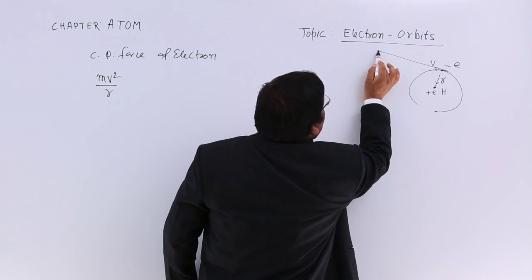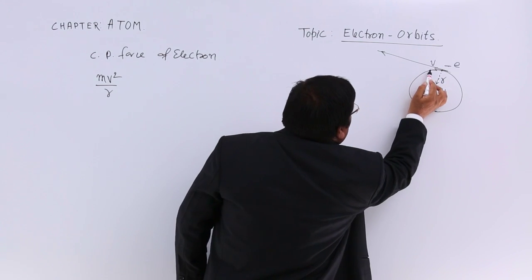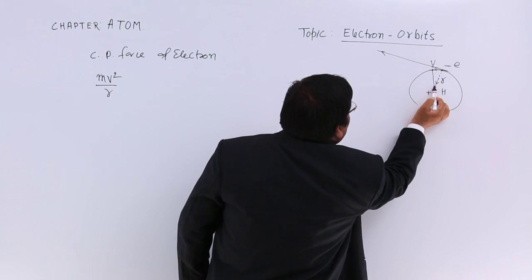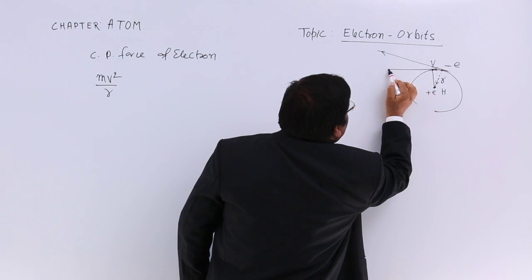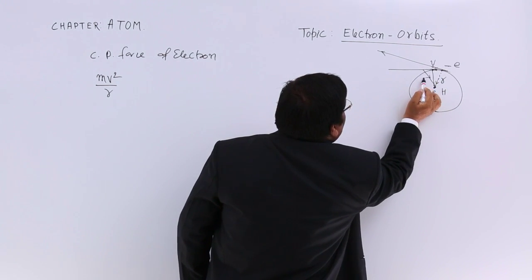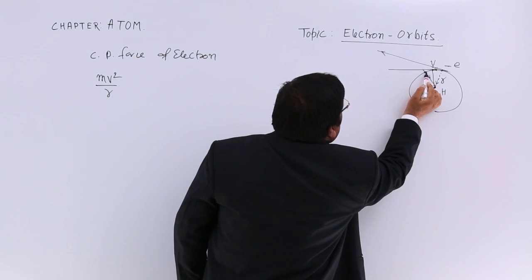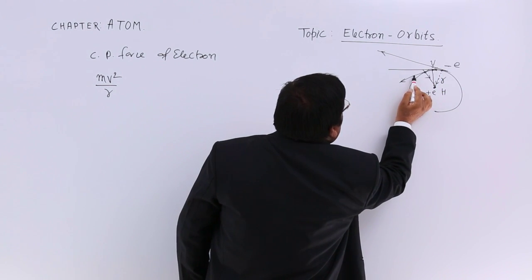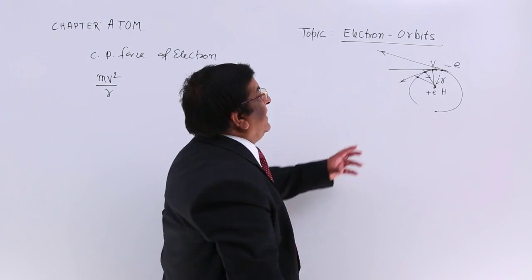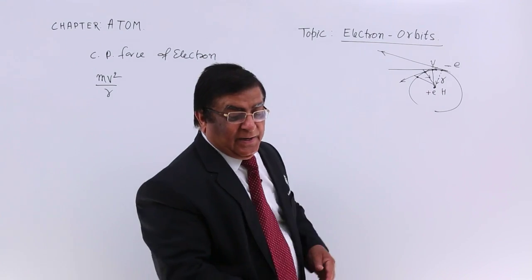The electron wants to move outward tangentially, but the centripetal force pulls it back, and it continues in its circular path. Again it wants to go outward but gets pulled back. In this way it keeps on moving, and the electrostatic force acts as the centripetal force.